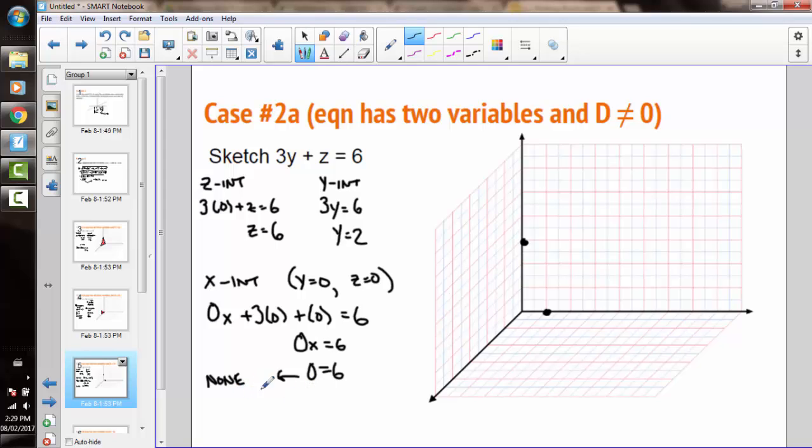So if there's no x-intercept, then this plane has to run parallel to the x-axis and never cross it. And I can just kind of imagine extending the lines of my plane. And so I have almost like a piece of wood or something leaning against a wall, creating that plane that never crosses the x-axis.